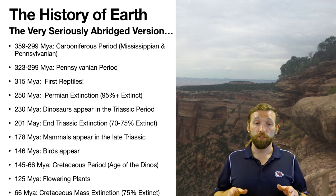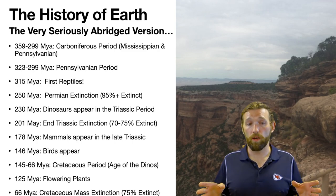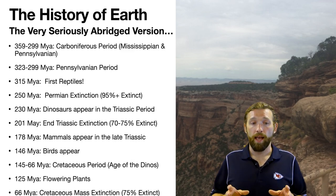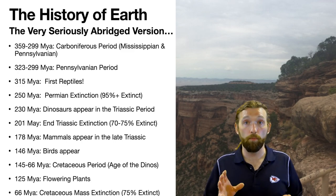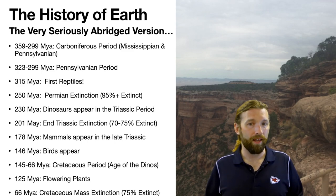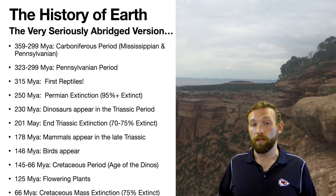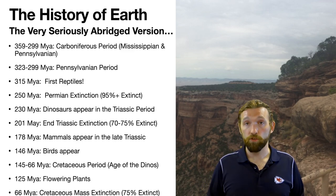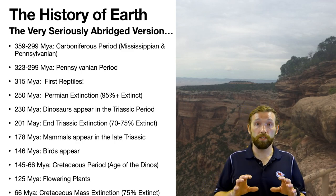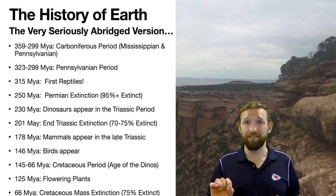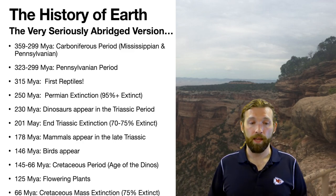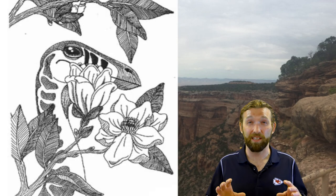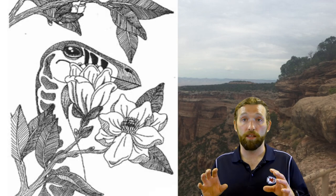During this time period, birds also show up — somewhere around 146 million years ago. Mammals also find their start somewhere in this time period as well; it could be around the same time as birds, just a little after or before. So mammals and birds are all around during the Cretaceous, but they haven't taken a dominant role — dinosaurs are still king. Flowering plants are also showing up during this time period. There's a lot happening in the Jurassic and Cretaceous.